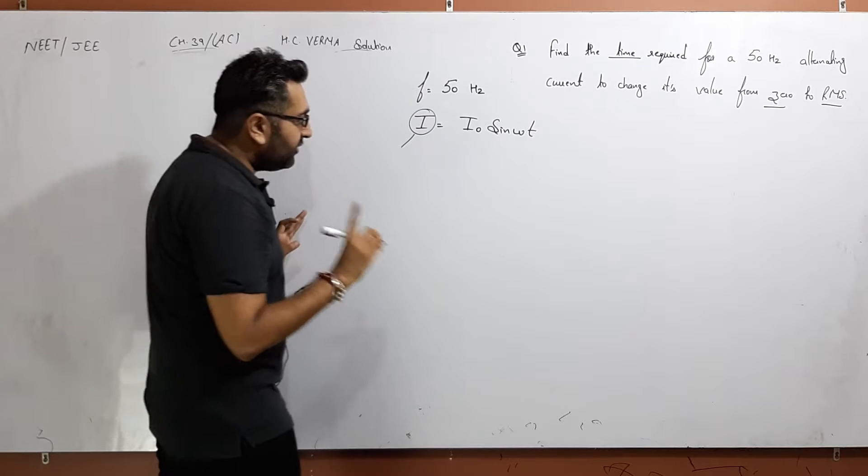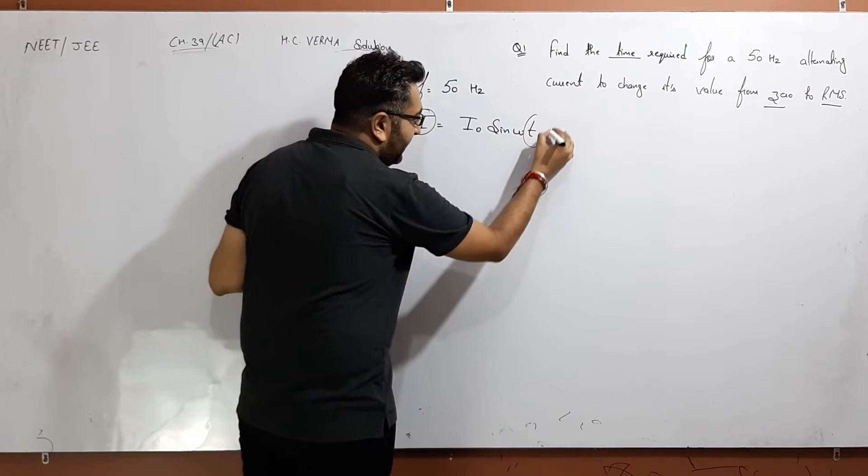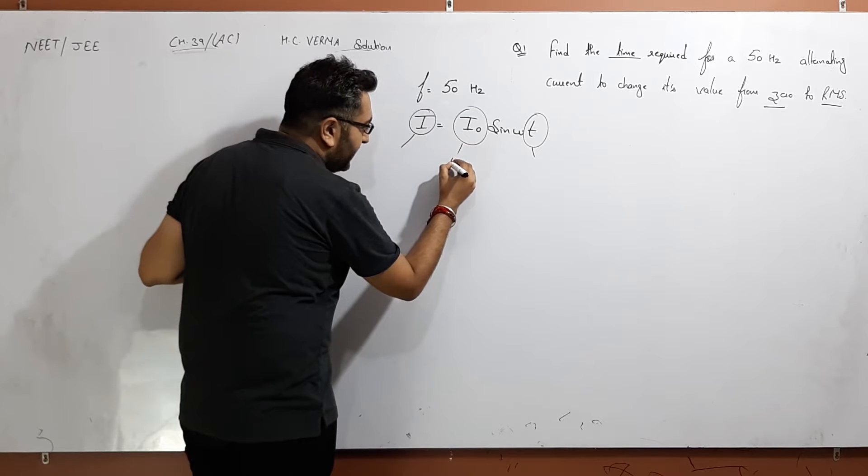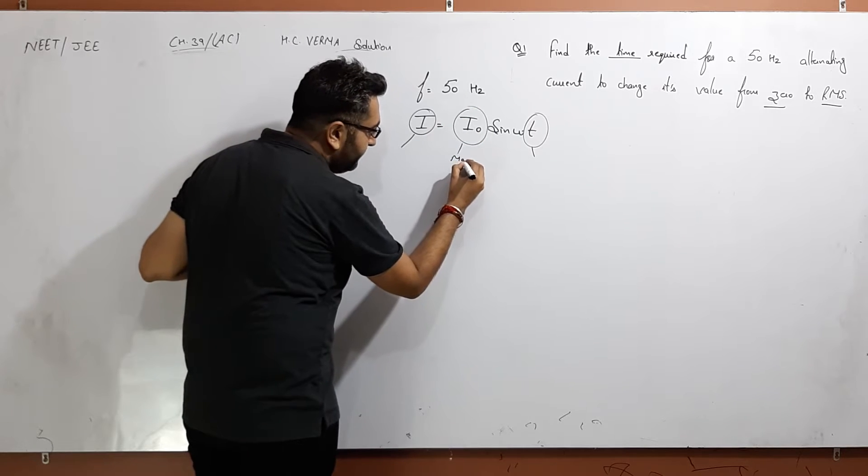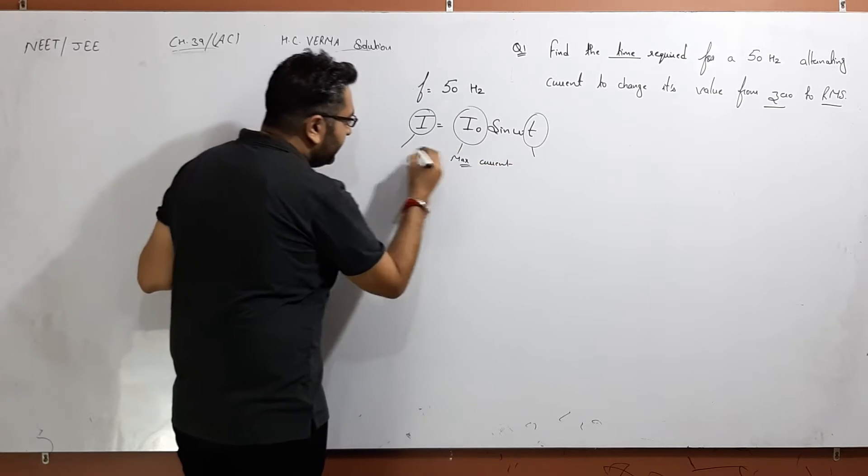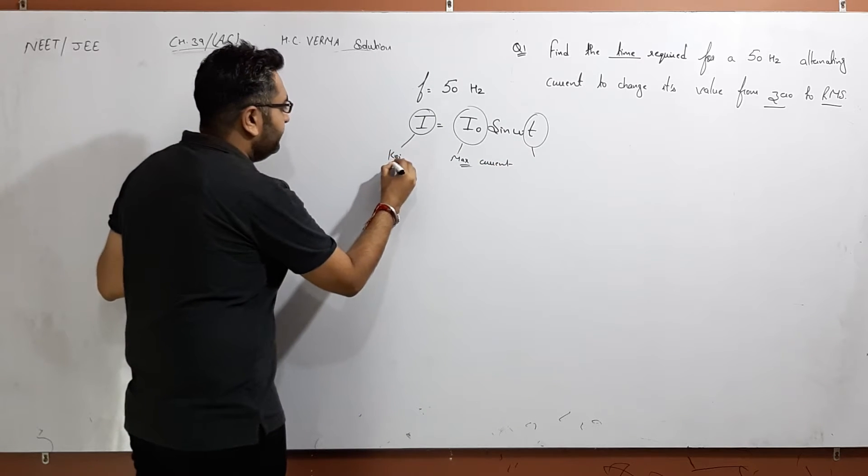What is I? It's the current at any instant of time t. What is I naught? It's the maximum current, which is the amplitude or maximum value of current. And t is any time interval.